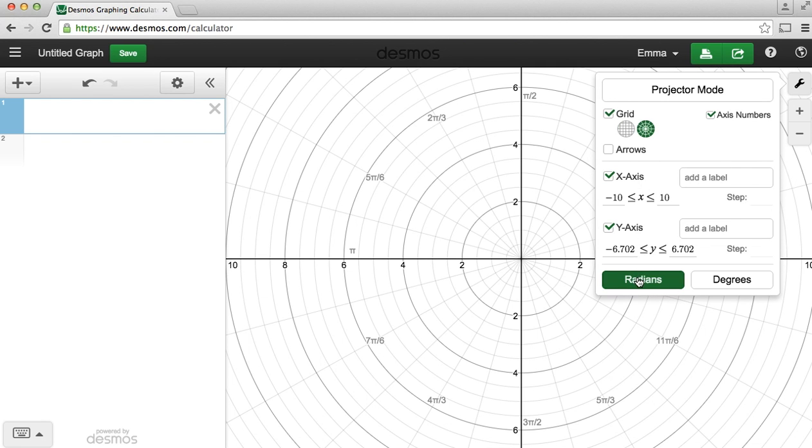We can also, when we're in this menu, change between radian mode and degree mode, and note that when I change to degree mode, the labels on our angle lines change from radians to degrees, and we'll stay in degree mode for this demonstration.